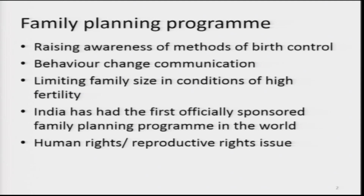Family planning programs aim at raising awareness of methods of birth control. Initially in the 1950s when the family planning program was started, due to traditional, institutional, and socio-economic reasons, people had high fertility and the average family size at that time was around 8. People attributed children to God's gift and did not know whether something could be done to limit family size. So the first and foremost point in any family planning program is to inform the people that it is in their hands to decide how many children they should have.